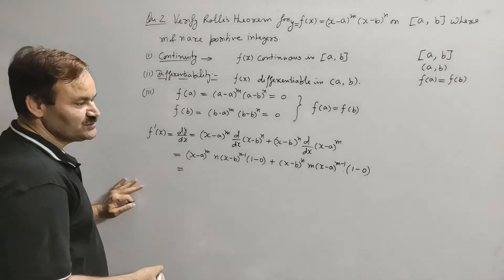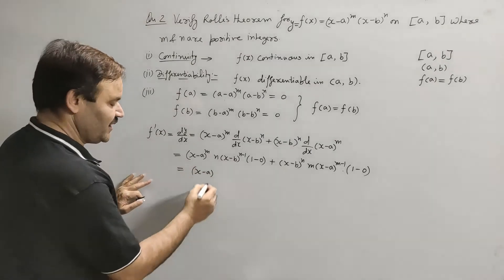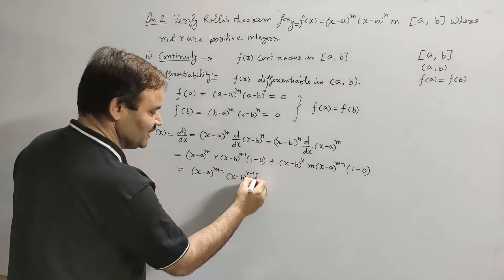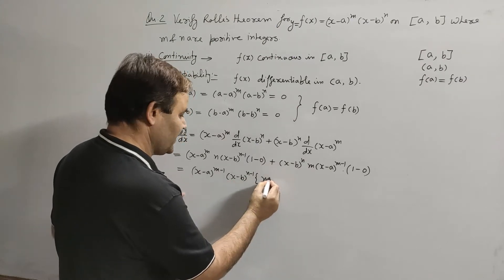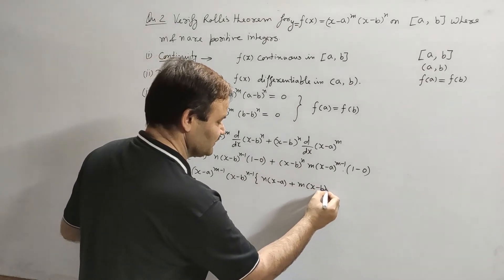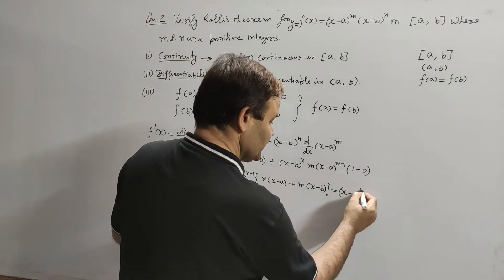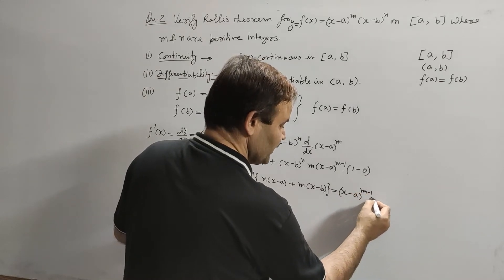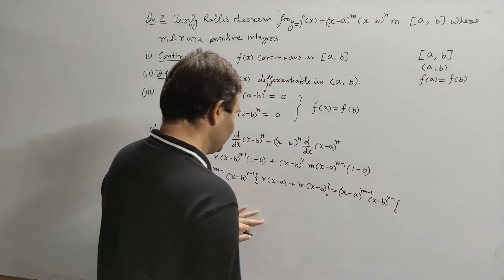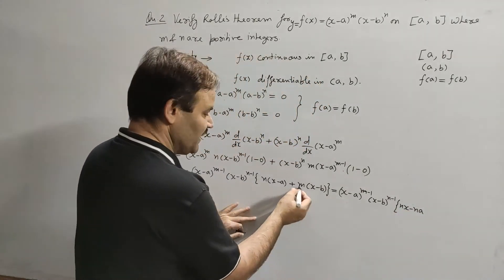Taking (x - a)^(m-1) and (x - b)^(n-1) as common factors, we get: f'(x) = (x - a)^(m-1) · (x - b)^(n-1) · [n(x - a) + m(x - b)], which simplifies to (x - a)^(m-1) · (x - b)^(n-1) · [nx - na + mx - mb].